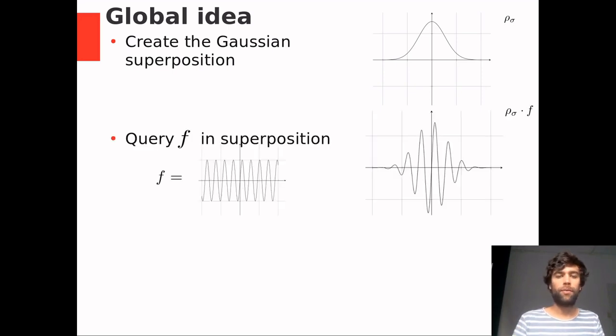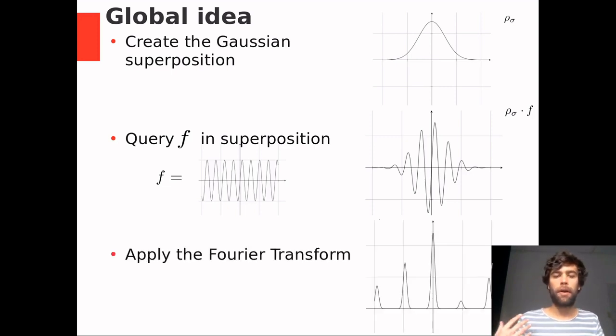After that, we query the periodic oracle function in superposition. This leads to a sort of wave packet. After that, we apply the continuous Fourier transform. This leads to a function, a ray function, that peaks at the dual lattice point. And then we measure.